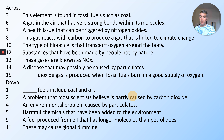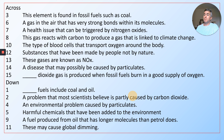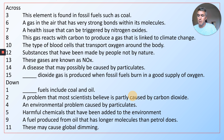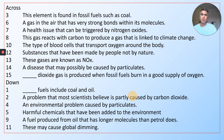Twelve across: substances that have been made by people, not by nature. Thirteen across: these are known as NOx. Fourteen: a disease that may possibly be caused by particulates. Fifteen: something dioxide gas is produced when fossil fuels burn in a good supply of oxygen. One down: these fuels include coal and oil. Two down: an environmental problem that most scientists believe is partly caused by carbon dioxide. Four: an environmental problem caused by particulates. Five: harmful chemicals that have been added to the environment. Nine: a fuel produced from oil that has longer molecules than petrol. Eleven: these may cause global warming.